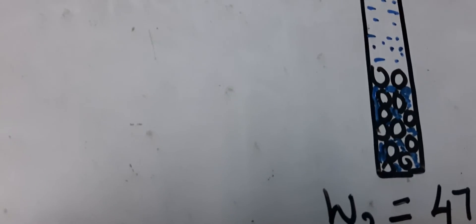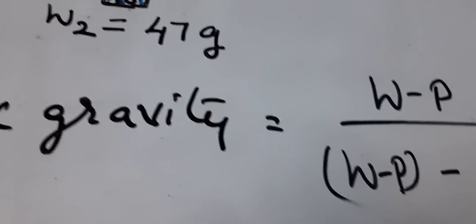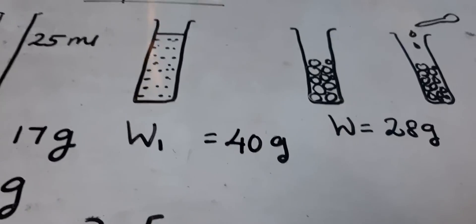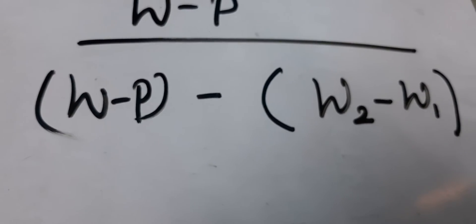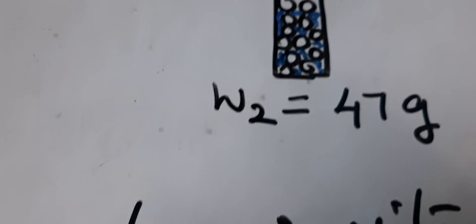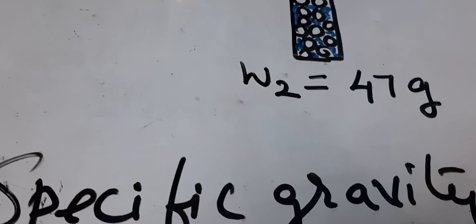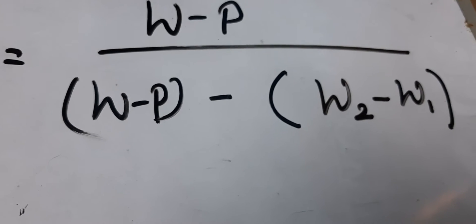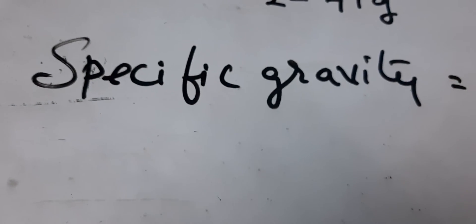Specific gravity can be calculated by this formula: W minus P gives you the mass of the substance. W2 minus W1 gives you the mass of the substance in water. So specific gravity equals (W − P) divided by [(W − P) − (W2 − W1)].